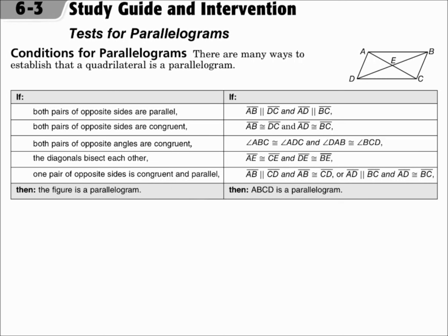There are many ways to establish that a quadrilateral is a parallelogram. In the last section, we were told that it is a parallelogram, and if it's a parallelogram, then certain things are congruent and certain things are supplementary. However, in this lesson, we don't yet know it's a parallelogram, so we're doing the questions in the opposite direction.